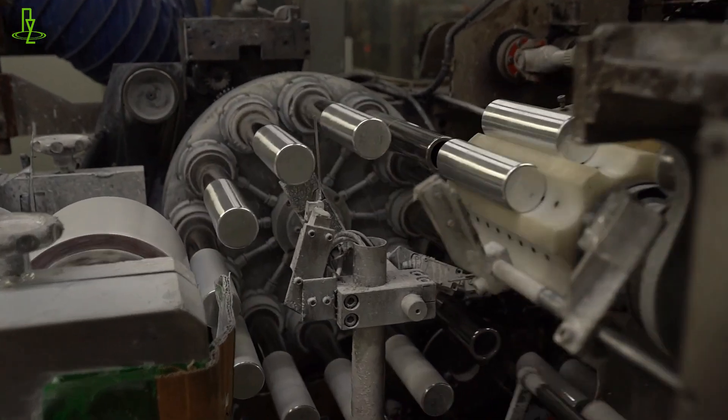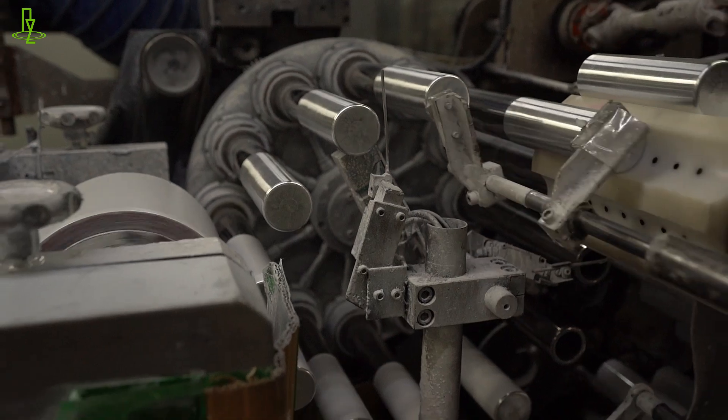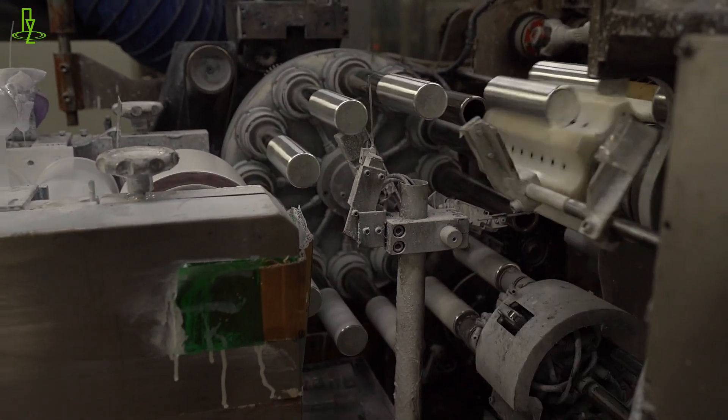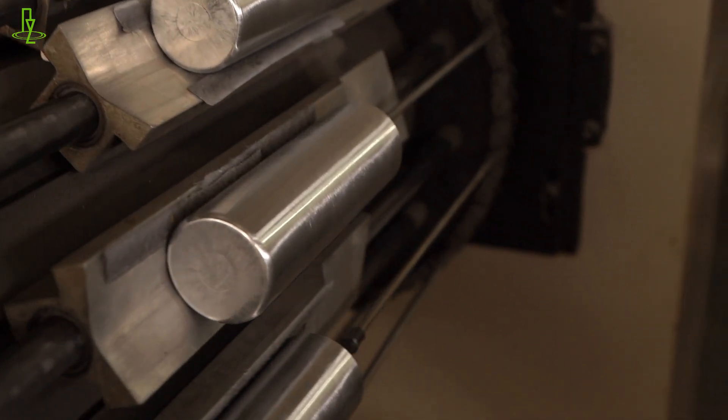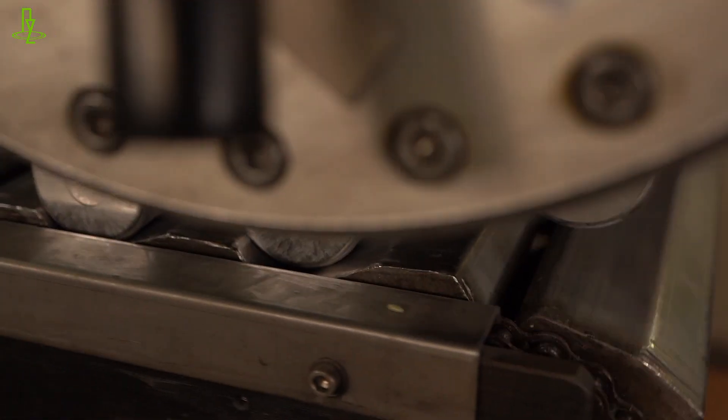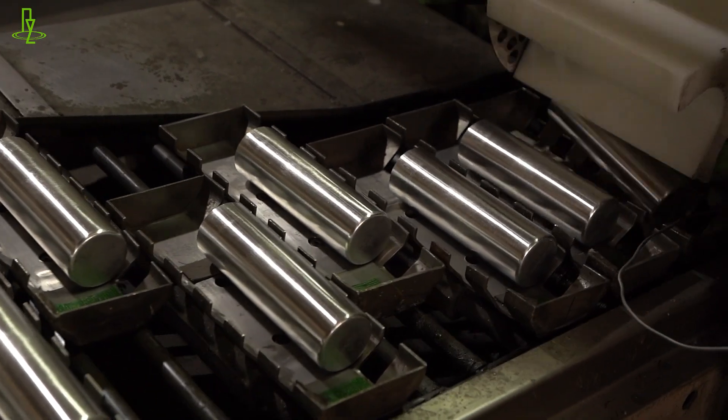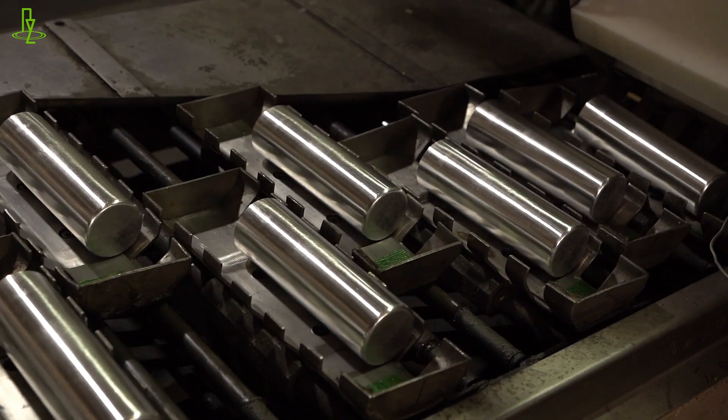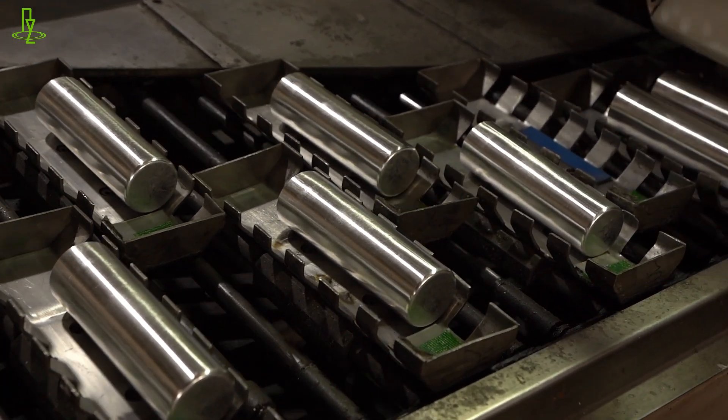Our two fully automated production lines can handle cans, bottles, and cups ranging from 22 millimeters to 66 millimeters in diameter, with an impressive annual capacity of 40 million tubes. With our dedication to quality and efficiency, we've expanded our reach to over eight countries worldwide.